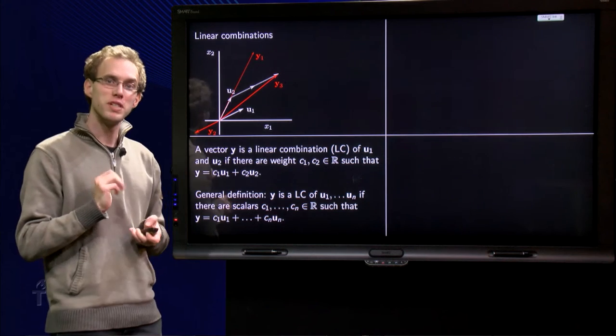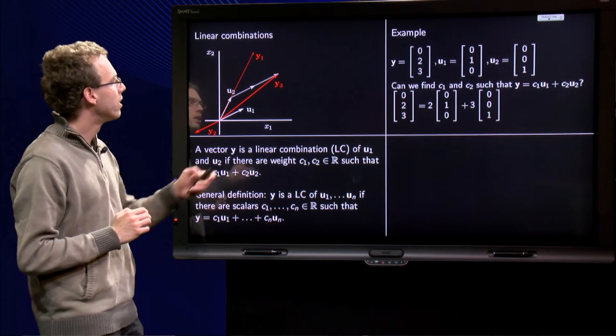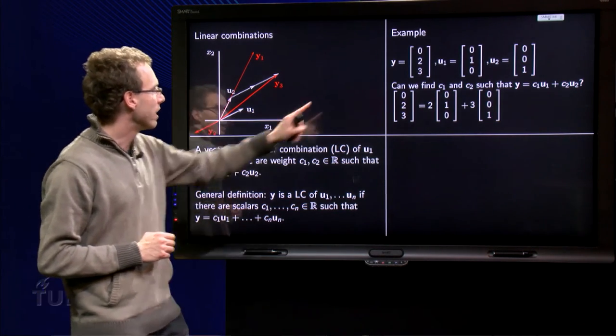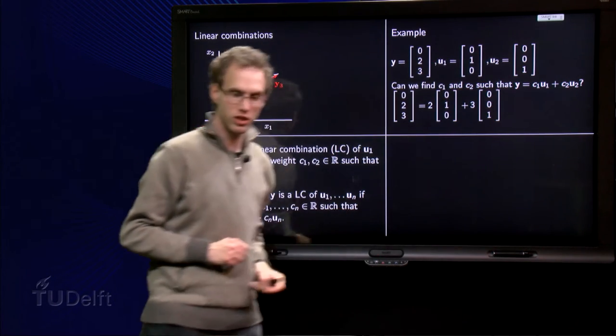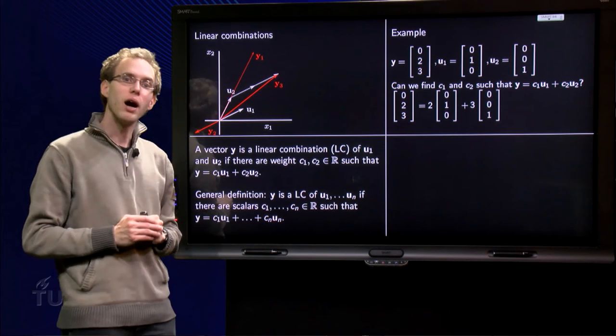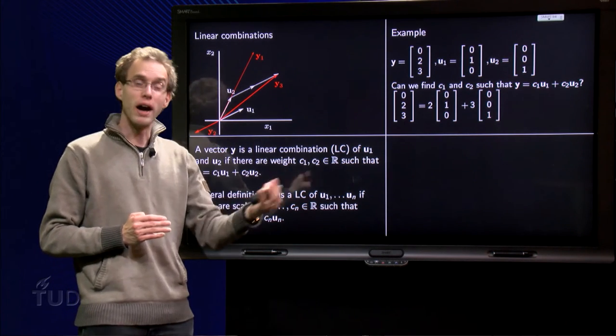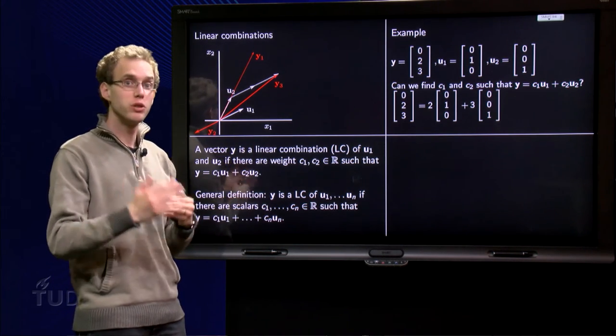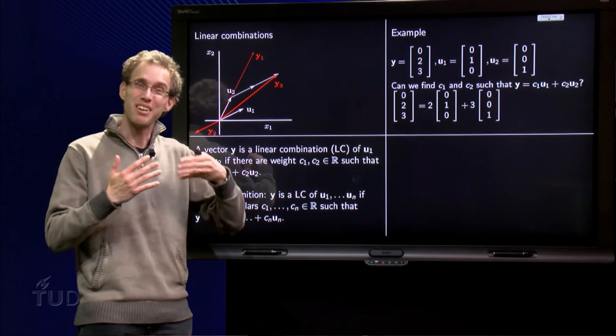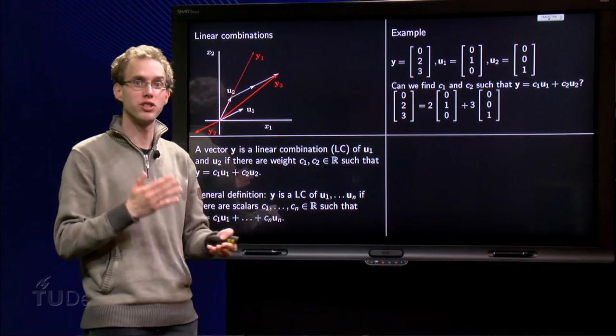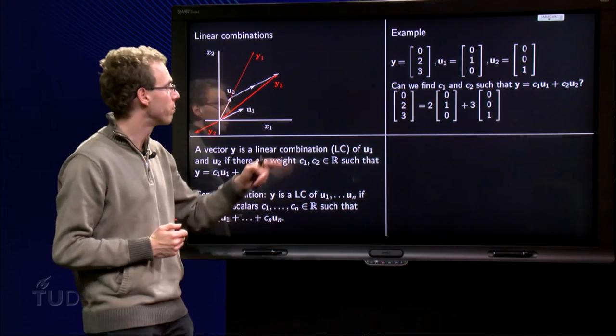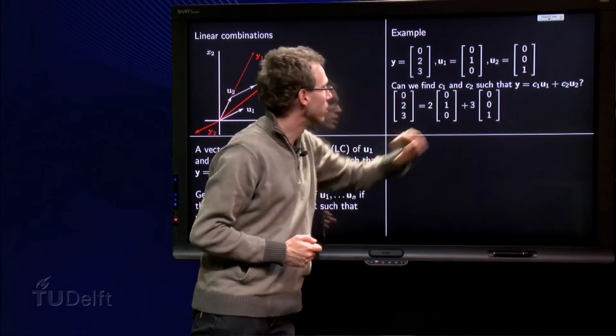Now let us look at some specific examples. Suppose we have y equals (0, 2, 3), u1 equals (0, 1, 0), and u2 equals (0, 0, 1). And now I am wondering whether y is a linear combination of u1 and u2. That means, can I find the weights c1 and c2 such that y equals c1 u1 plus c2 u2?